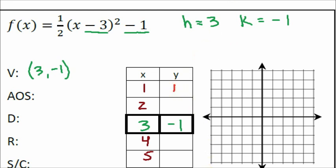When you plug in x = 2 you get negative 0.5. You should be practicing this with your calculator — don't just write the numbers down, put them in your calculator to verify. When you plug in x = 4 you also get negative 0.5, and when you plug in x = 5 you get one.